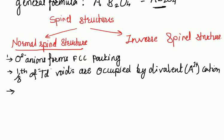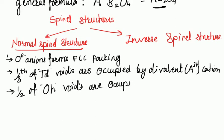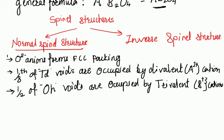And one-half of the octahedral voids are occupied by the trivalent B³⁺ cation. These two facts are what we need to remember to determine whether a structure is normal spinel or inverse spinel.